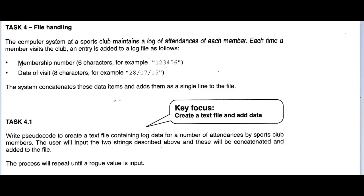This video is on Task 4 of pre-release, and Task 4 deals with file handling. Task 4 says that the computer system at a sports club maintains a log of attendances of each member. Each time a member visits the club, an entry is added to a log file. The membership number is entered as input, and the date of visit is given as input. The membership number must be six characters long and the date of visit must be eight characters long.